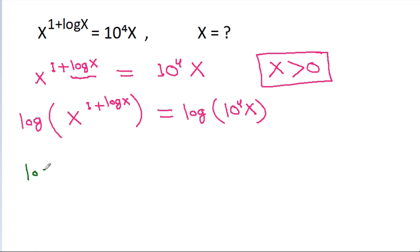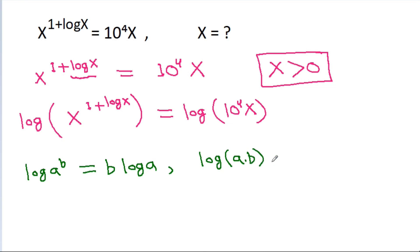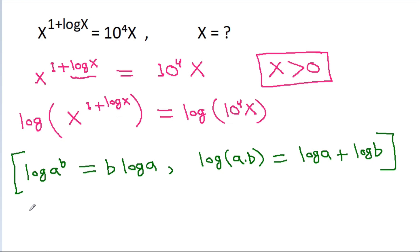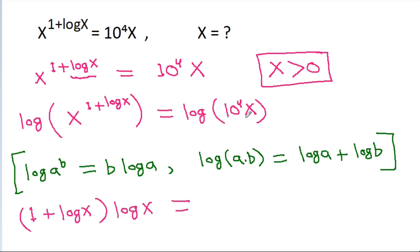We know that log(a^b) = b times log(a), and also log(a times b) = log(a) plus log(b). So this will be equal to (1 plus log x) times log x is equal to log(10^4 times x), which will be equal to log(10^4) plus log x.